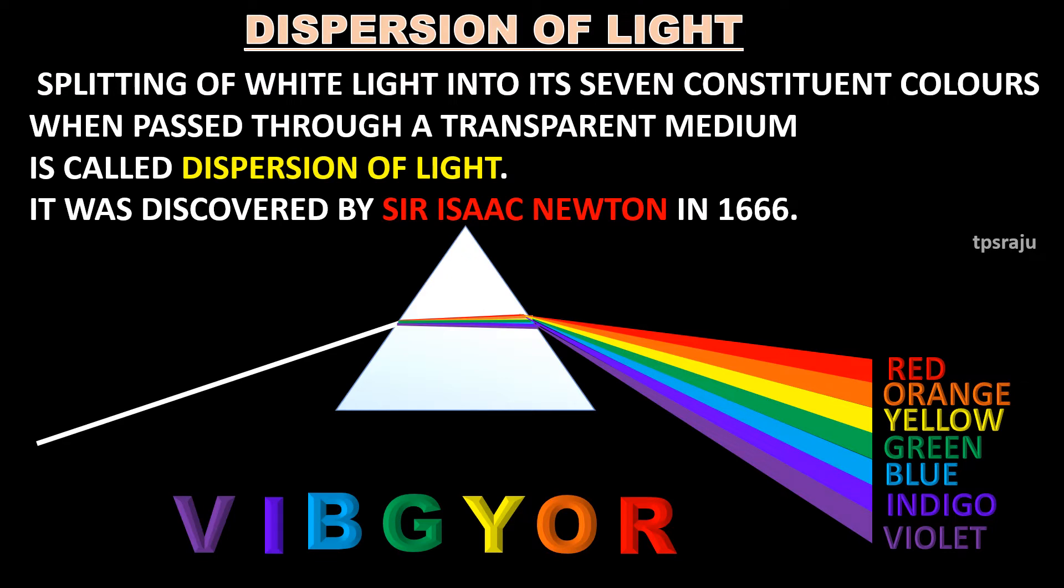Splitting of white light into its seven constituent colors when passed through a transparent medium is called dispersion of light. It was discovered by Sir Isaac Newton in 1666.